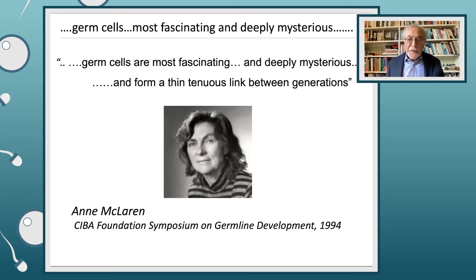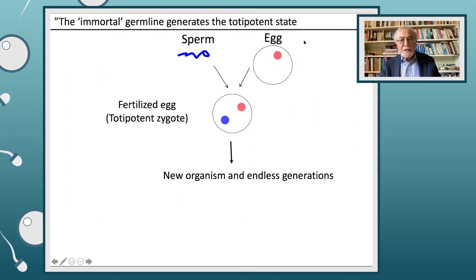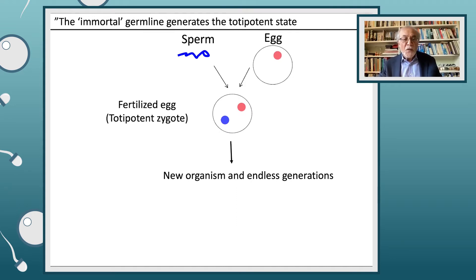One of the endpoints of the germ cell lineage is to make gametes — eggs and sperm — which at fertilization creates a totipotent zygote, which gives rise to a new organism and, in theory, endless generations. So this is what germ cell biology is all about: to create this very unique totipotent state.